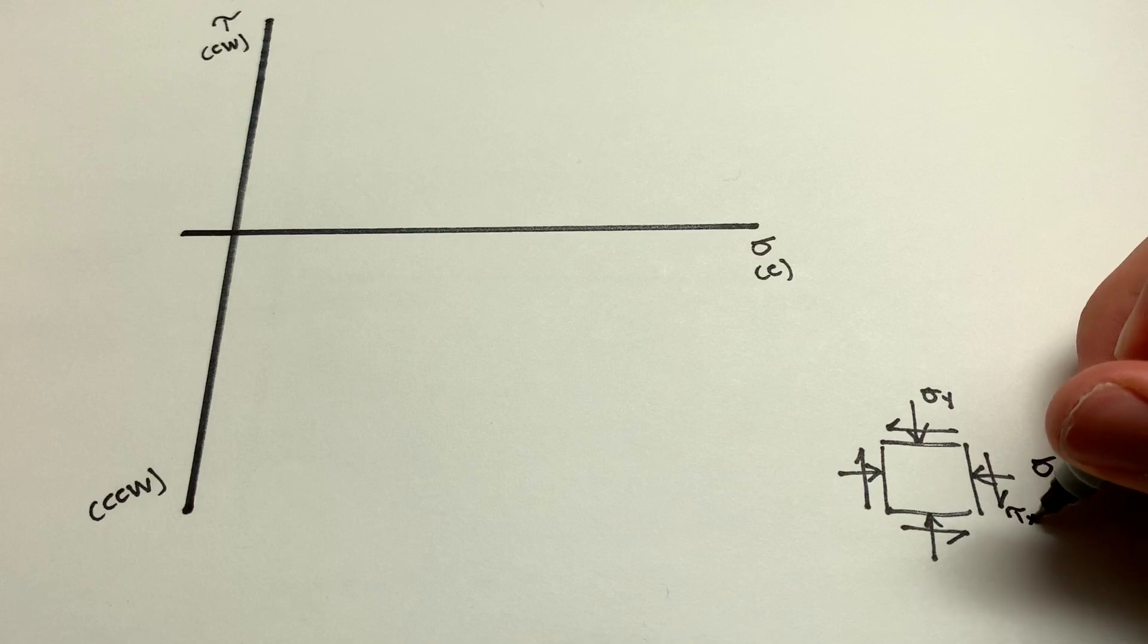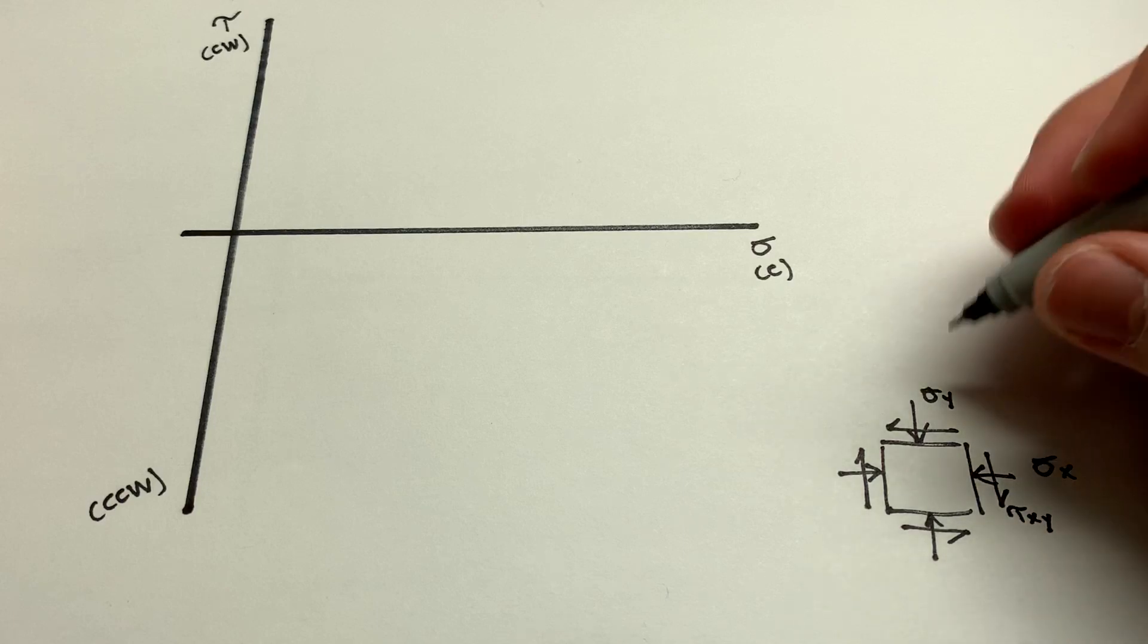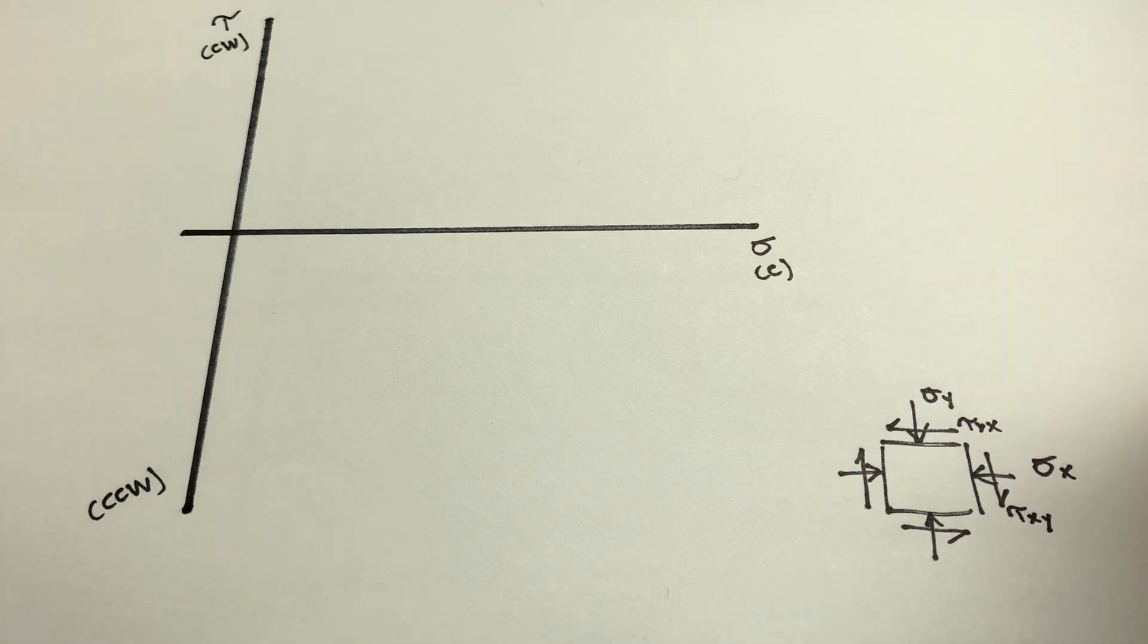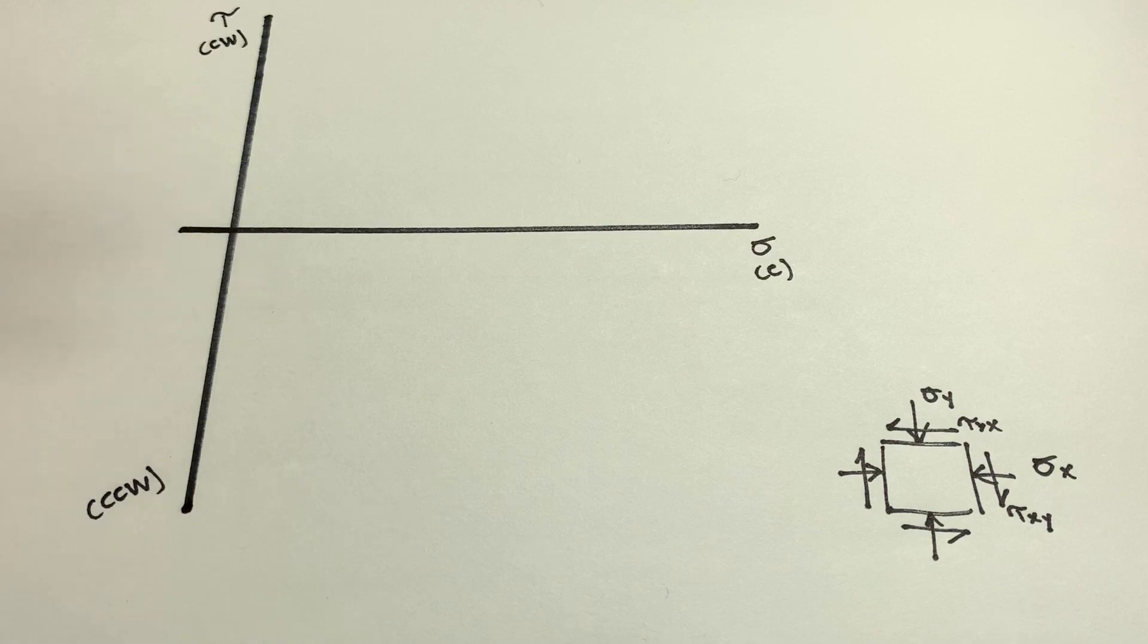And then we'll have our shear stresses acting parallel to these planes here. And of course, since this one is acting in the y direction, we'll call it tau xy. And this is going to be tau yx. Now, the way I drew this, all of these are just in their natural positive states, right? So this makes it easy for us.